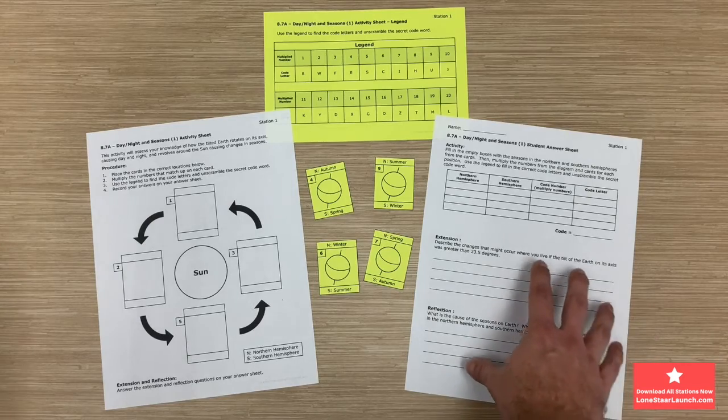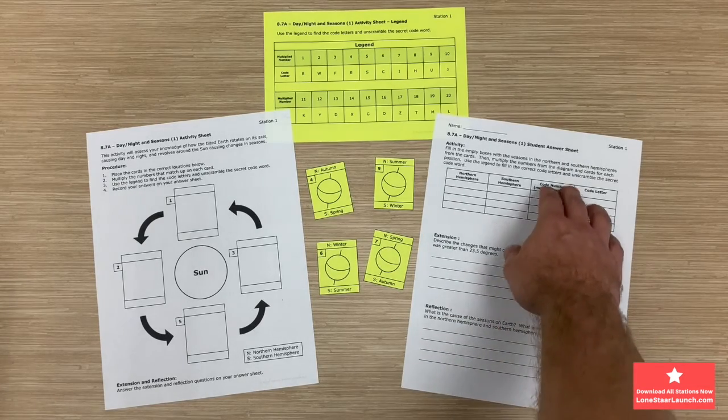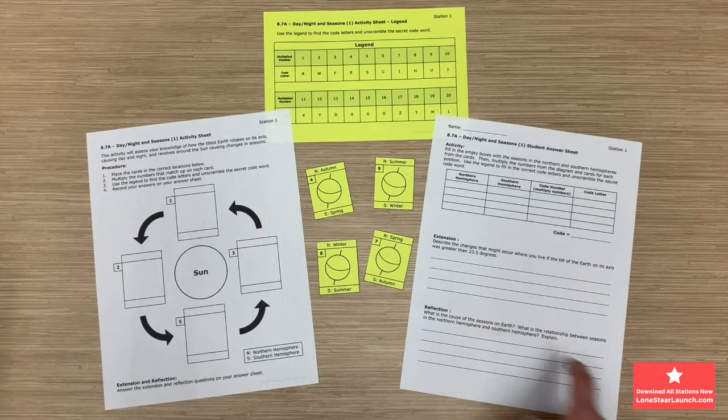On the right hand side you'll see the student answer sheet that contains the activity extension and reflection. This will travel with each student as the stations are completed.